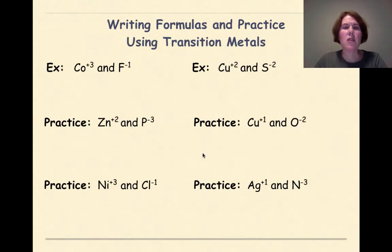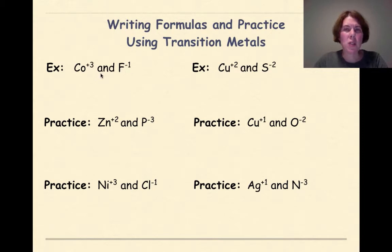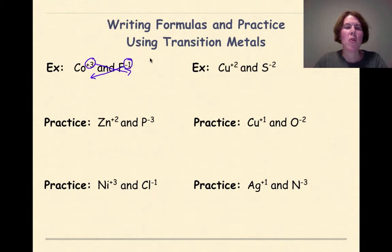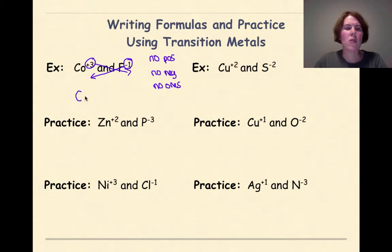Let's do some examples writing formulas using transition metals. We have Co plus 3 and F minus 1. We're going to take that number and cross it down to the opposite element — but remember the mantra: no positives, no negatives, and no ones. So I write Co first, cross the negative 1 down — not including that — then write F with a subscripted 3, which comes from the cobalt. For the next example, Cu plus 2 and S minus 2: the plus 2 and minus 2 cancel each other out, so we write this as CuS.